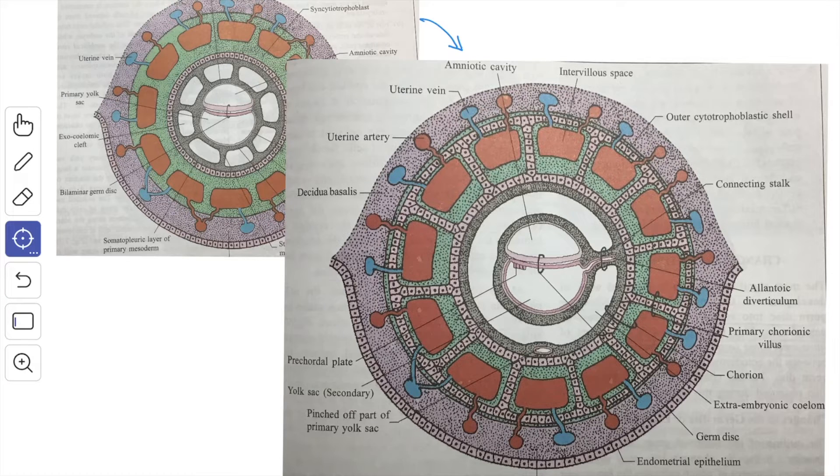Now, the trabeculae is converted into primary chorionic villae by the invasion of the cytotrophoblast in the central axis of each trabeculae. The lacuna spaces are now called as inter villae spaces.